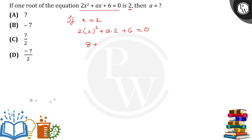8 + 2a + 6 = 0. 2a + 14 = 0, a = -14, a = -14/2, a = -7. So B, -7 is the right answer. Thank you.